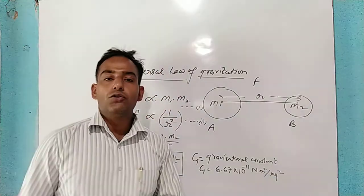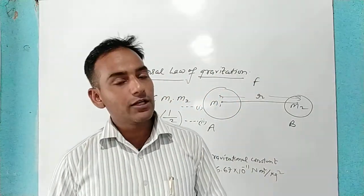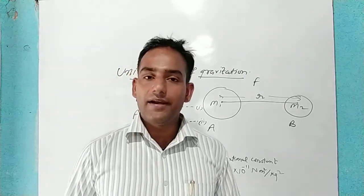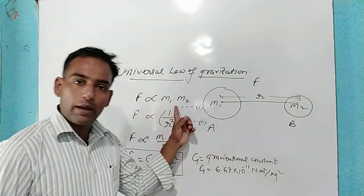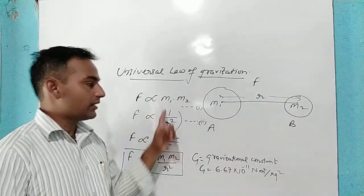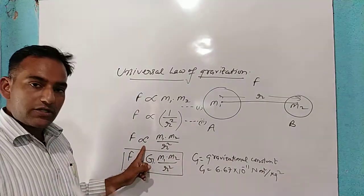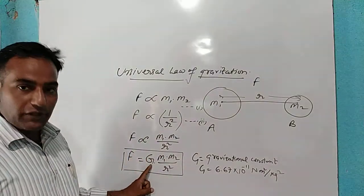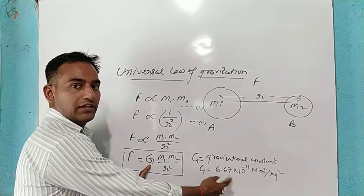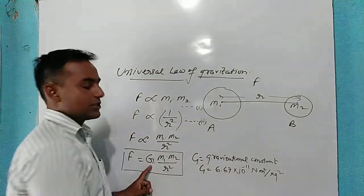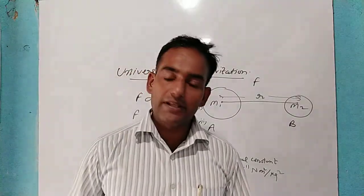Listen carefully. The universal law of gravitation states that the force of attraction between two bodies is directly proportional to the product of their masses and inversely proportional to the square of the distance between them. Combining: F is proportional to M1 into M2 upon R square. Removing the proportionality sign, F equals G times M1 into M2 upon R square, where G is the gravitational constant with a fixed value of 6.67 into 10 to the power minus 11 Newton meter square per kg square. This is the universal law of gravitation — it comes every time in the examination, so please remember this.